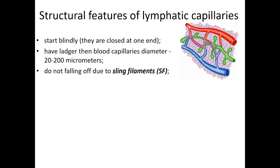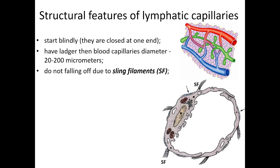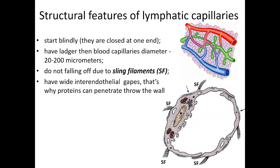Lymphatic capillaries do not collapse due to sling filaments. This schematic representation of an electronogram of a lymphatic capillary in cross-section shows that it gapes wide, does not fall off, and has an open lumen. This is due to bundles of microfibers — sling filaments — on the outer surface of the endothelial cells, which radiate outward and spread into the interstitial connective tissue. Lymphatic capillaries have wide endothelial gaps, which is why proteins can penetrate through the wall along with interstitial fluid entering the capillary.